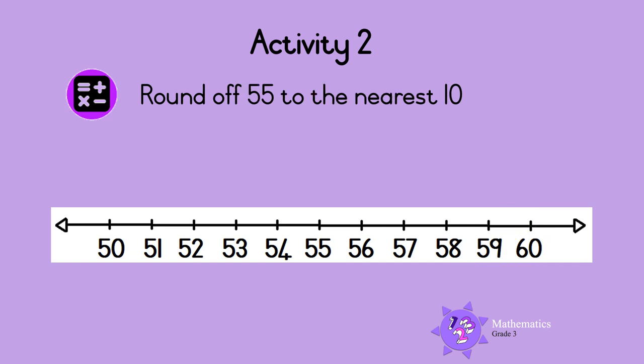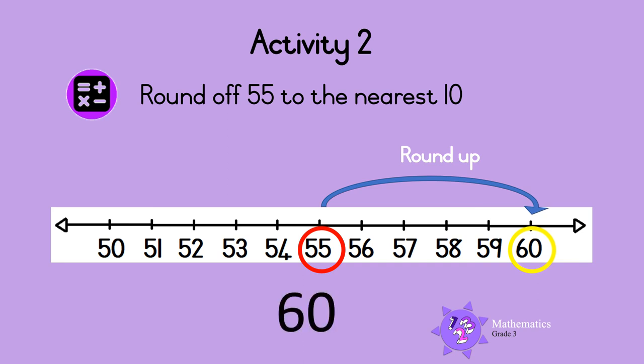Last one. Round 55 to the nearest 10. Here is 55 on the number line. 55 is in the middle between 50 and 60, so we round up to 60. So 55 rounded to the nearest 10 is 60.